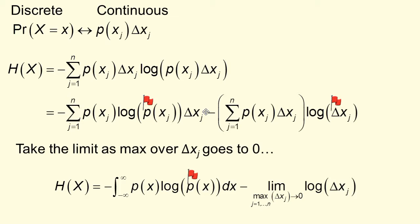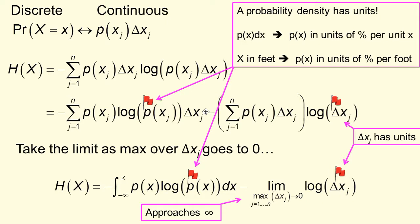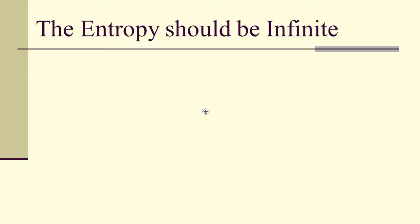Now, this raises all sorts of red flags. First off, a probability density has units. So if I've got p(x) dx, then p(x) is in units of percent per unit x — if x is in feet, then p(x) is in units of percent per foot. Likewise, delta x_j has to have units. So we are taking logarithms of things that have units, which we don't allow. And this limit as delta x goes to zero of log(delta x) becomes infinite, and the entropy should be infinite.